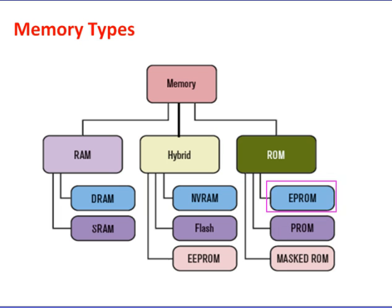An EPROM (Erasable and Programmable ROM) is programmed in exactly the same manner as a PROM. However, EPROMs can be erased and reprogrammed repeatedly. To erase an EPROM, you simply expose the device to a strong source of UV (ultraviolet) light. A window in the top of the device allows the light to reach the silicon, resetting the entire chip. EPROMs are more expensive than PROMs, but their ability to be reprogrammed makes them an essential part of the software development and testing process.